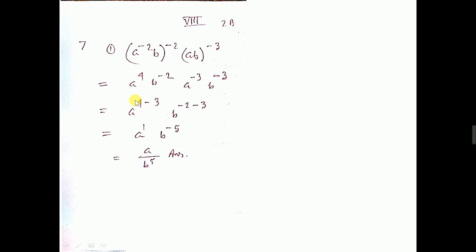Now here, opposite sign means subtraction, so 4 minus 3 is 1. Same sign means addition, so 3 plus 2 is 5. The sign of the greater is minus, so minus here. The minus sign will go down to the denominator, and b to the power minus 5 becomes b to the power plus 5. That is the answer.